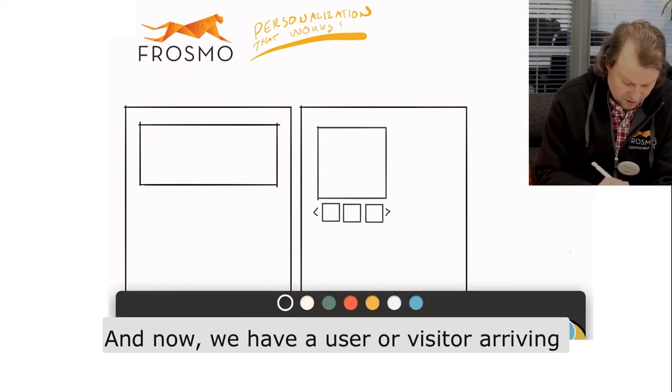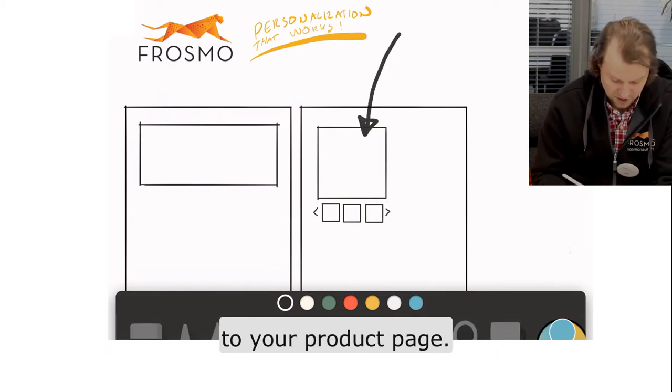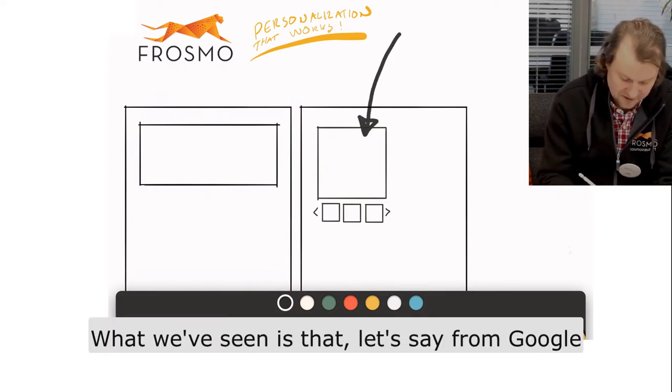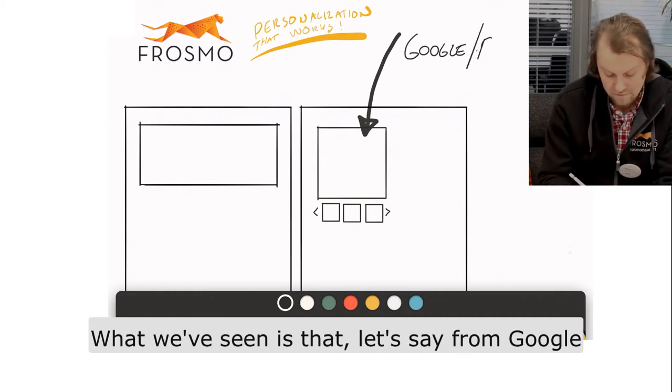Now we have a user or visitor arriving to your product page. What we've seen is that they land, let's say from Google or Facebook.